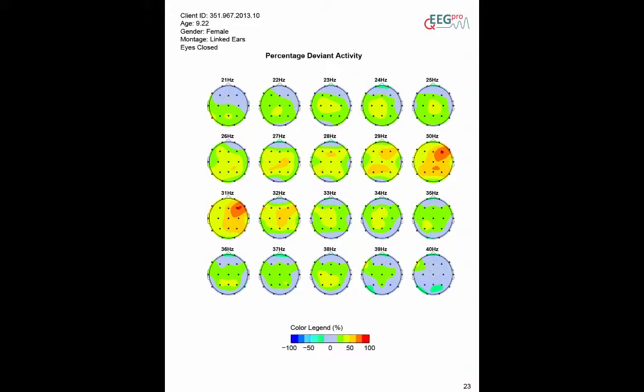If the average z-score is positive for a particular frequency and electrode, the percent deviant activity represents the time that the power is above a z-score of 2.3.